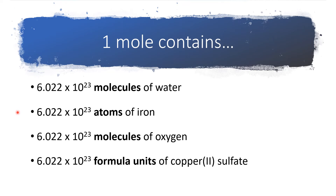Iron is one of the elements where when we write its symbol we just write Fe. If we're talking about one mole of the element oxygen, which is a Brinkelhoff, it means we have two atoms of oxygen stuck together to give us a diatomic molecule, so one mole contains 6.02 times 10 to the 23rd molecules of oxygen. For our last one, copper sulfate is an ionic compound because it's a metal plus a polyatomic ion, so the appropriate term is formula units — one mole of copper sulfate contains 6.02 times 10 to the 23rd formula units.